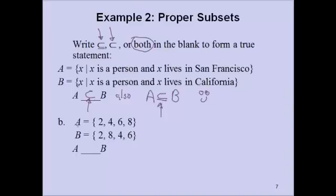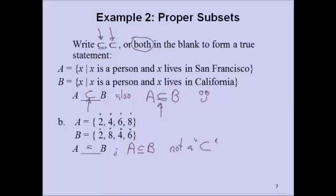Now consider A = {2, 4, 6, 8} and B = {2, 8, 4, 6}. The element 2 shows up in both, 4 shows up in both, 6 shows up in both, and 8 shows up in both. This means A equals B — they're exactly the same set, just in a different order. So A is a subset of B, but it is not a proper subset of B, because they're equal. Remember, the proper subset cannot allow equivalence.